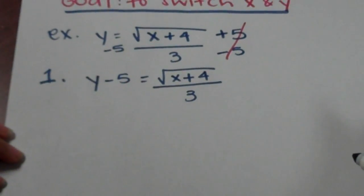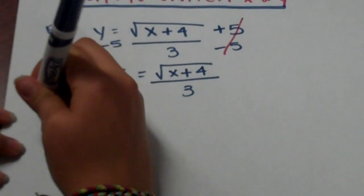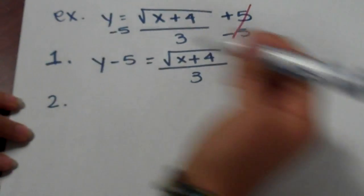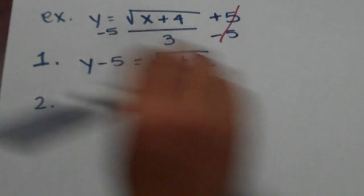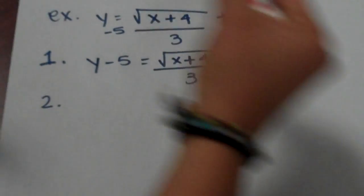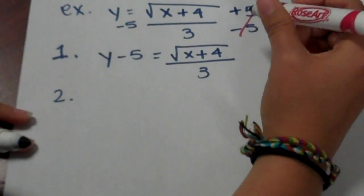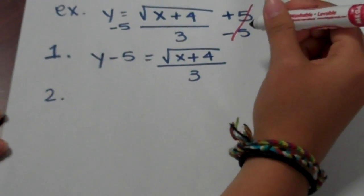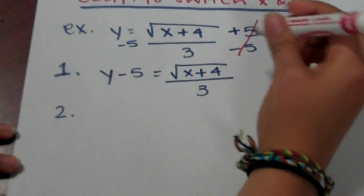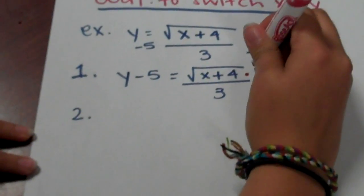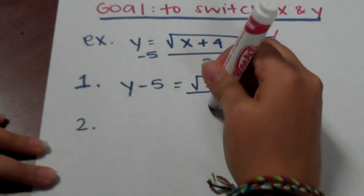Our second step is to multiply by the denominator or divide by the coefficient, depending on the case. In our equation, we are going to multiply by 3 to get rid of the denominator.